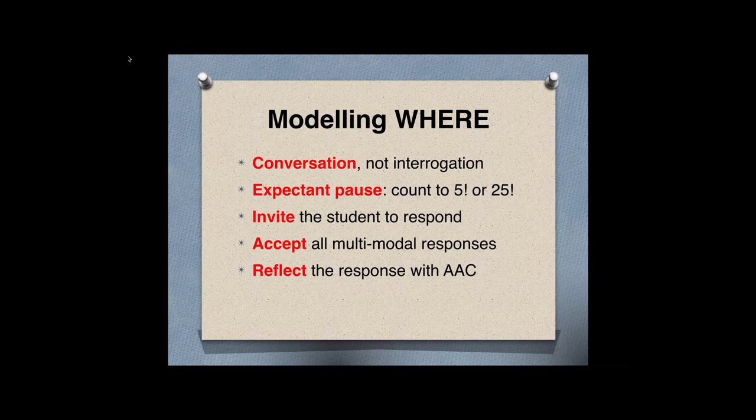Remember while modeling 'where,' it's a conversation, not an interrogation. We're going to provide an expectant pause. For some kids, you only need to wait a second or two and they're already organizing their bodies to sign, gesture, or use their communication system. For others, we might need to count to 25 or even higher. For emergent communicators, they might not have a response at all, and that's okay — we keep going. When someone doesn't immediately respond in a conversation, we know how to keep it going by providing more information or a response ourselves.